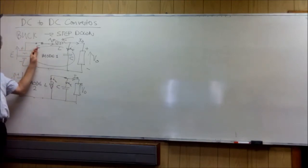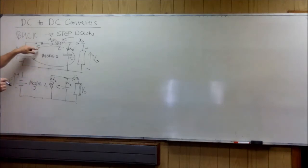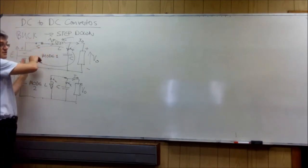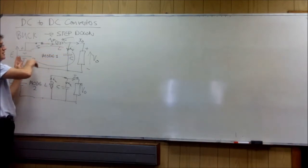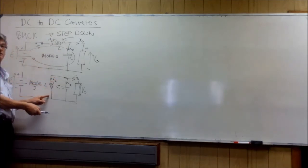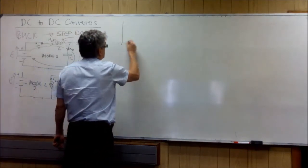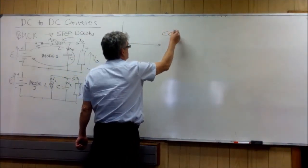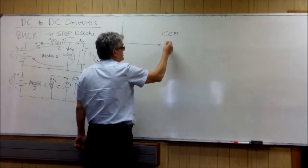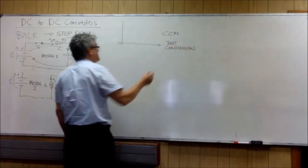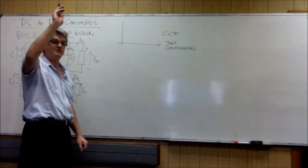The heart of the circuit is the inductor. The switch operates at a very high frequency. The inductor is the heart of the circuit because in Mode 1 current is flowing through it, and in Mode 2 current is flowing through it. In continuous conduction mode, the current is just continuous — the moment it hits zero, it starts increasing.